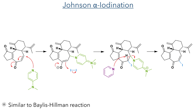With the tricyclic carbon framework now complete, the authors set about installing the correct functionality around this core. This proceeded with the Johnson alpha-iodination reaction, in which DMAP acts as a nucleophile and undergoes conjugate addition to the enone group, forming an enolate intermediate which reacts with iodine and is then deprotonated by pyridine to restore the enone structure. Mechanistically this reaction is quite similar to a Baylis-Hillman reaction.